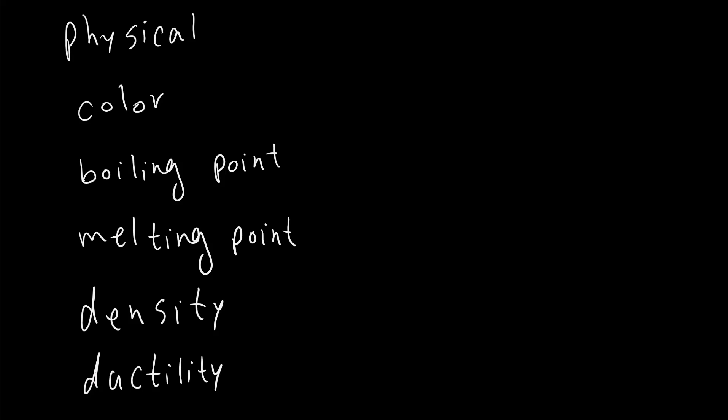How should we know these are physical properties? Because when we observe these properties, the composition of the compound doesn't change. For example, if I'm observing a compound that has a blue color, by observing this, the composition of the material doesn't change.